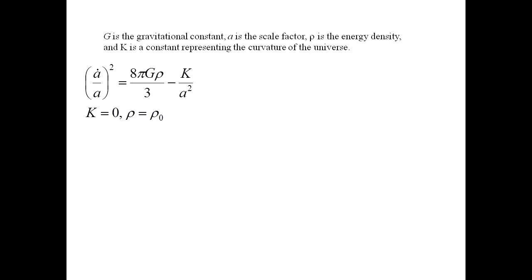This has the following effect on the FLRW equation. We get rid of the k term and clean up the rest of it by calling 8πGρ₀ over 3 C squared. Taking the square root of both sides, multiplying by A and subtracting CA. Oh, look! How sweet!